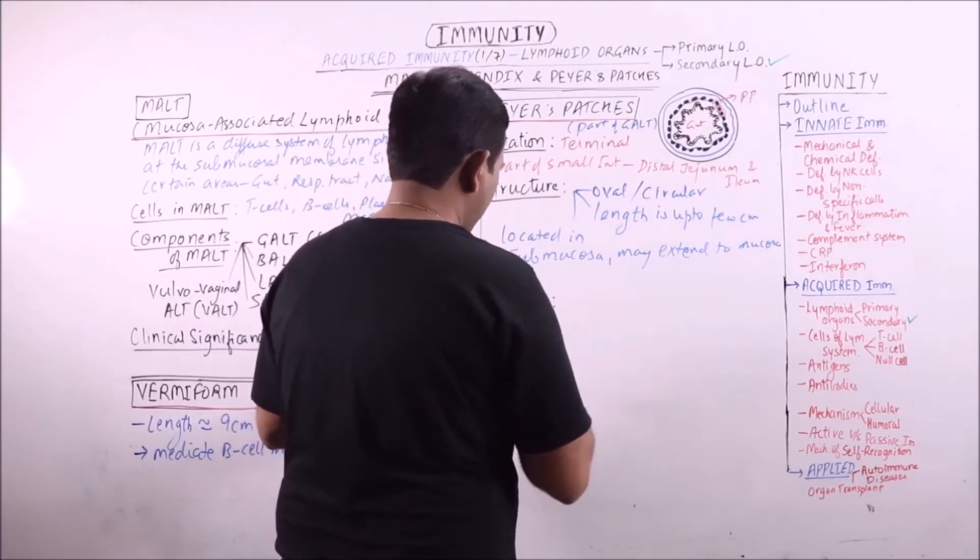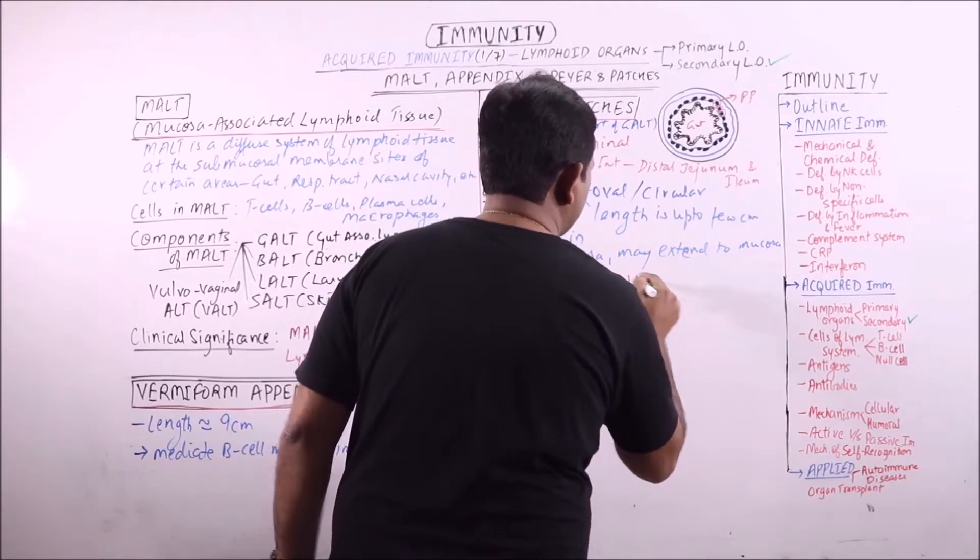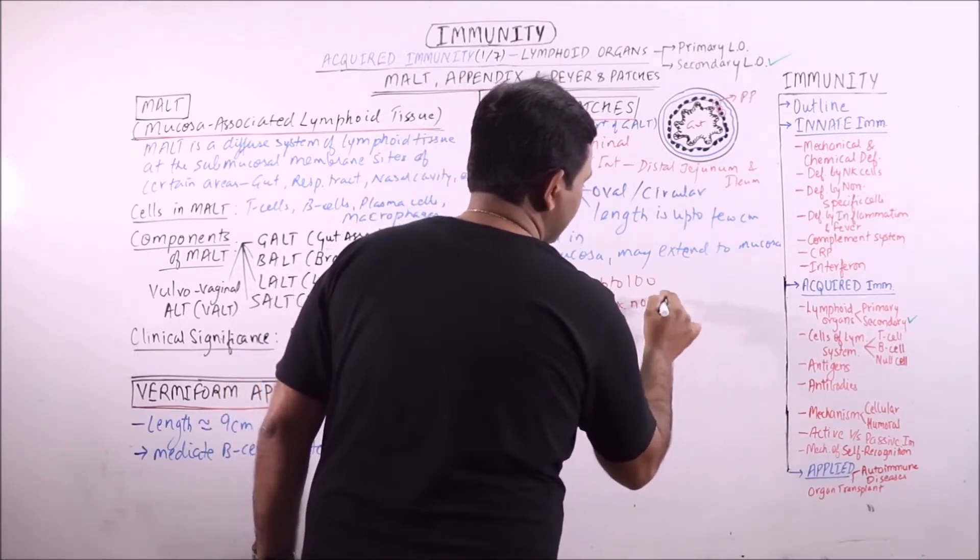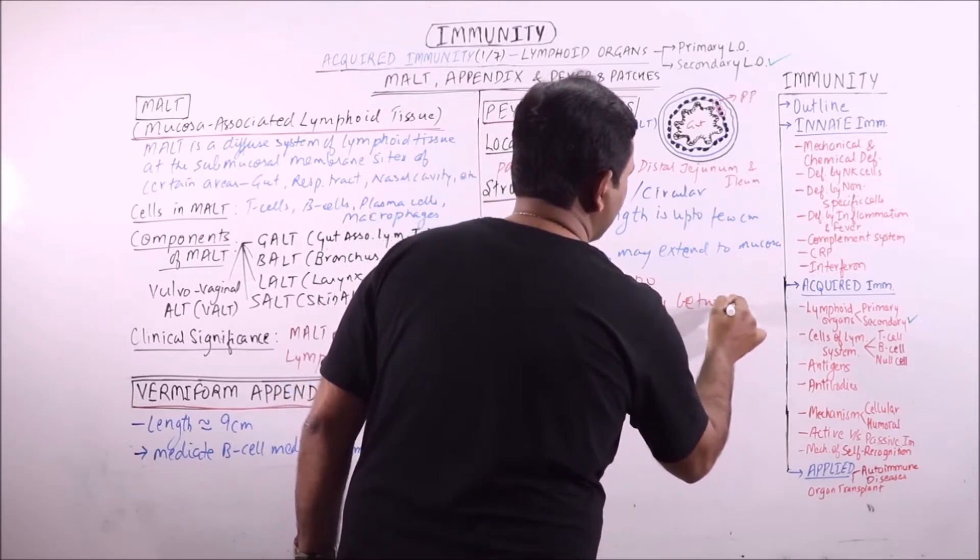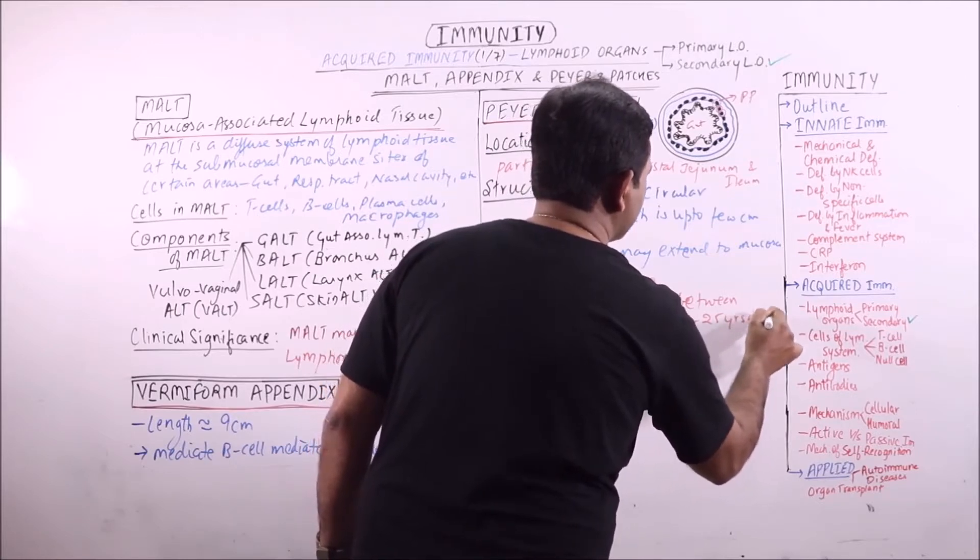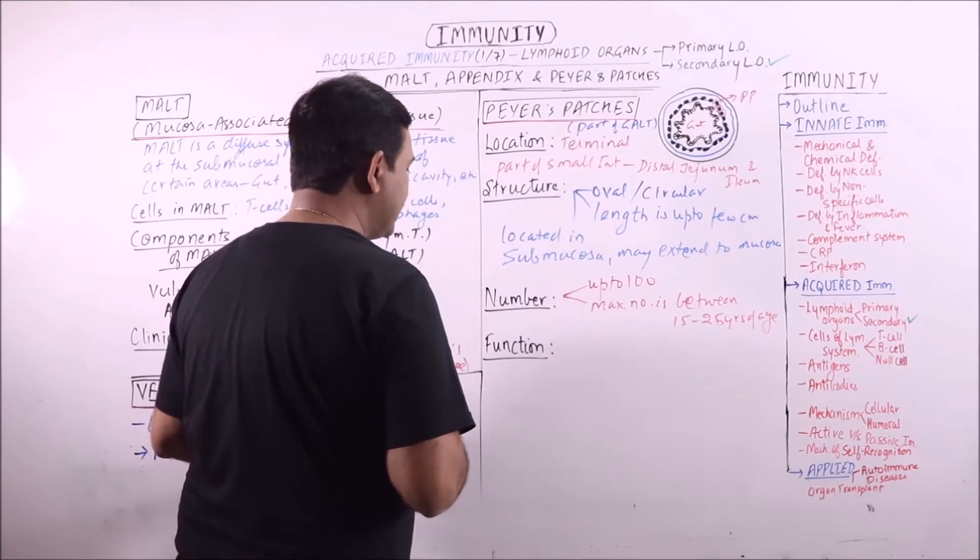Number. Their number may be up to 100. Maximum number is between 15 to 25 years of age, thereafter it decreases.